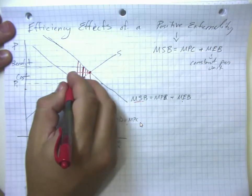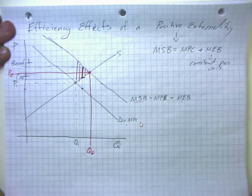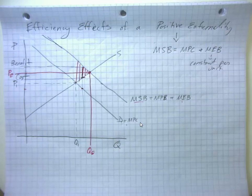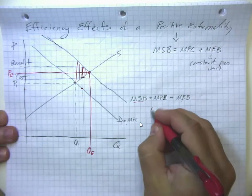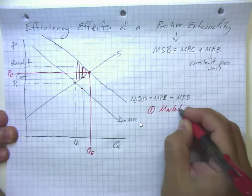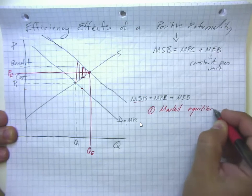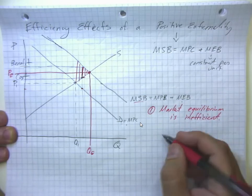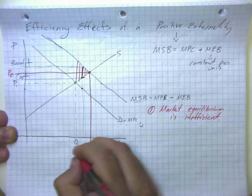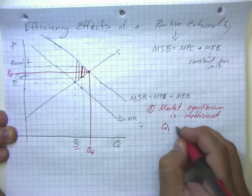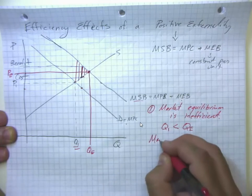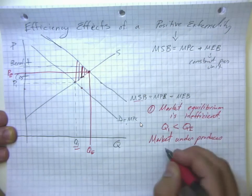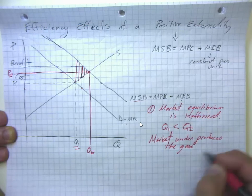To get there, the efficient price of the output would be something like that. So how can we actually persuade or incentivize people to do so? Before we go there, just remember the market equilibrium is inefficient in this case. In particular, the market underproduces, because the market equilibrium quantity is less than the efficient quantity. So market underproduces the good associated with the positive externality.